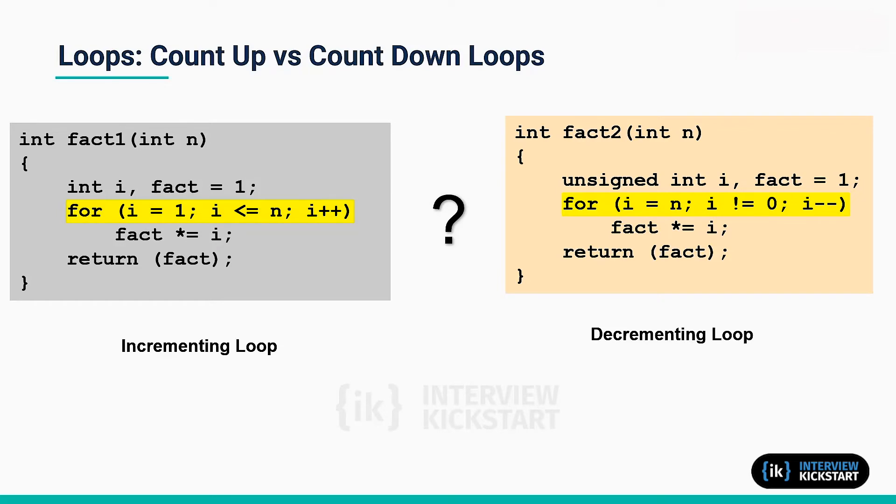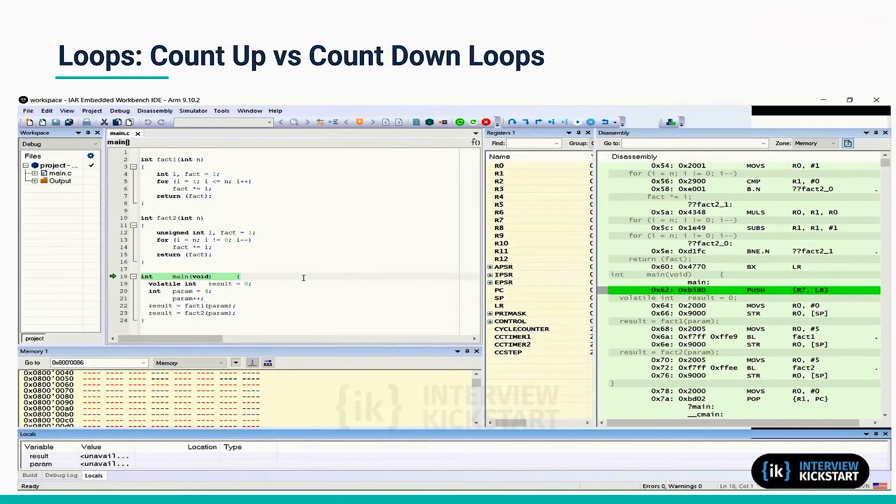So let's look at that in the disassembled code generated by the actual compiler. Here is the source code of the program that computes factorial in two different ways. As you can see, the main function is calling two versions of factorial, fact1 and fact2.